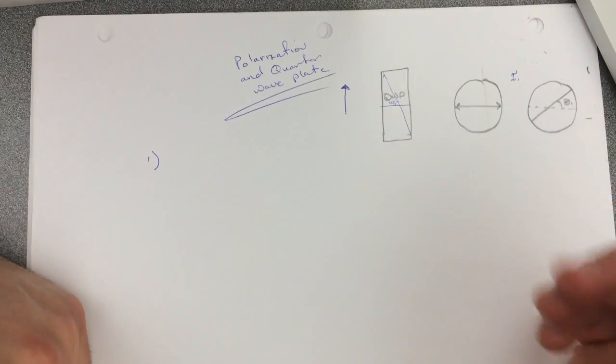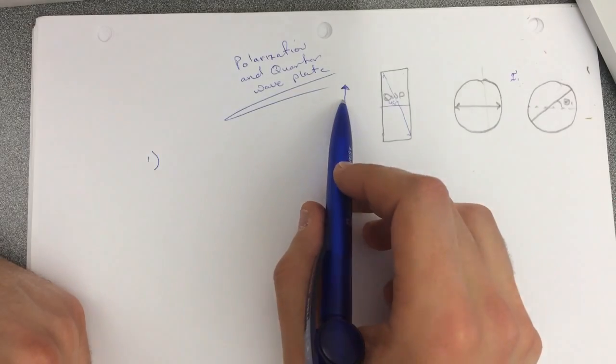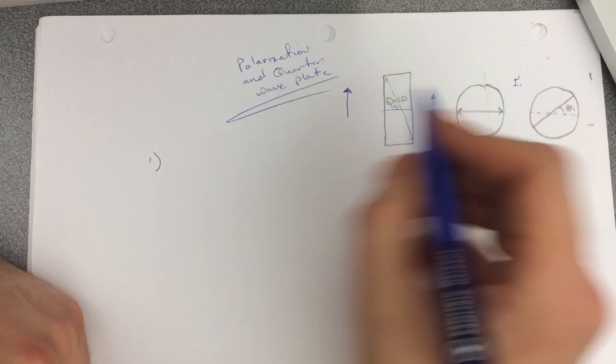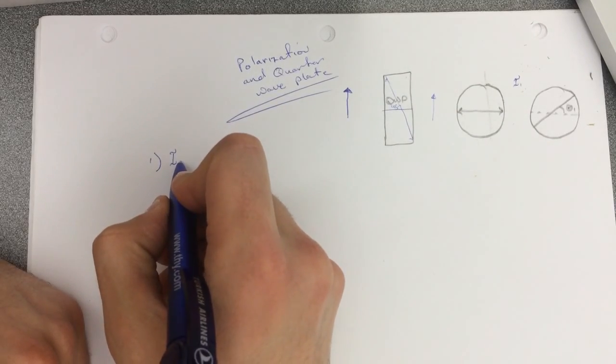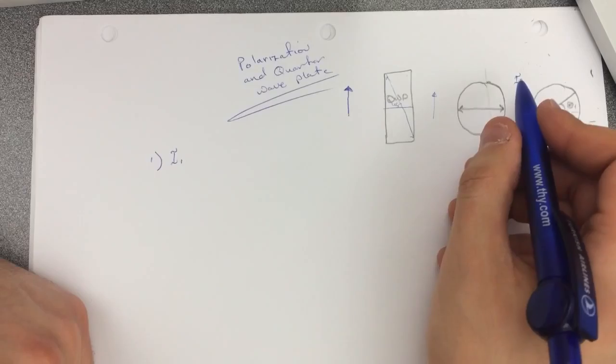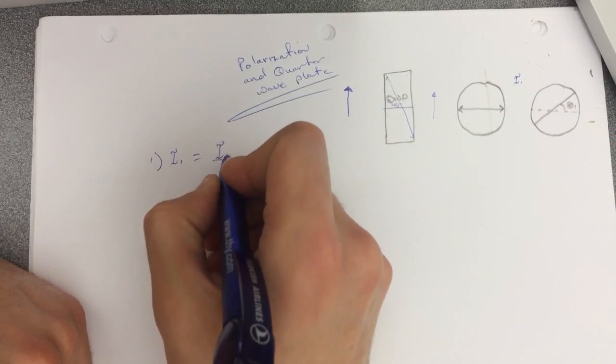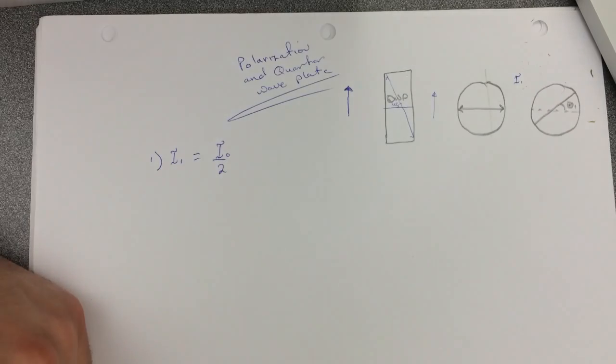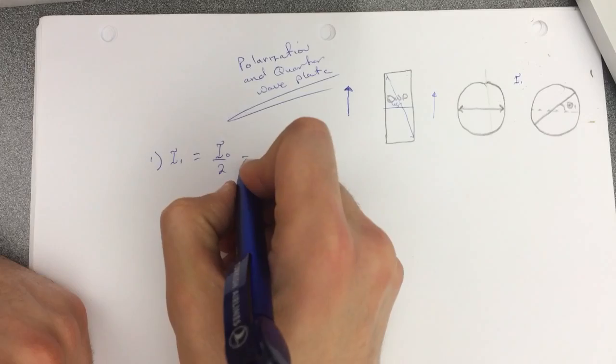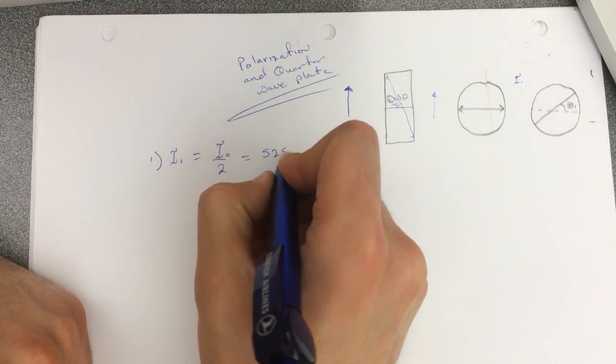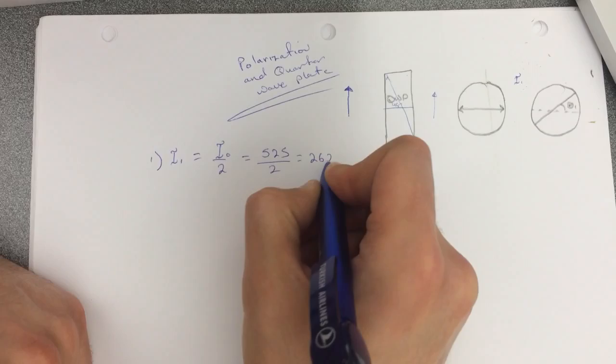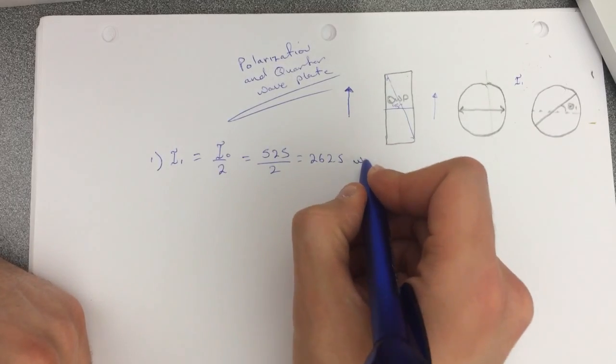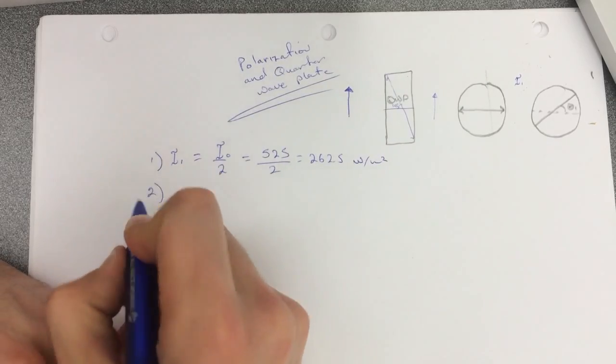When the light comes here this thing doesn't affect the intensity, just I think makes a difference in the angle speeds one side. So this one will come the same as here the intensity. So I one, which I call this I one, will be equal to I naught over two. So it's 525 divided by two which is 262.5 watts per meter squared.